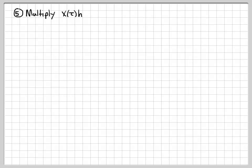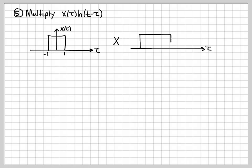Step 5: multiply x(τ) times h(t minus τ). Here's x(τ), and we multiply it by h(t minus τ) using the general plot from step 4. This is where we start doing our loop — we need to take this product for many different values of t. Depending on the value of t, there are different cases, so we iteratively work through steps 4, 5, and 6 to come up with those cases.